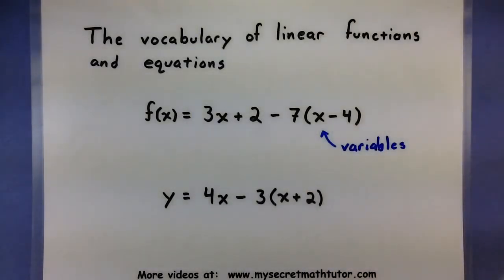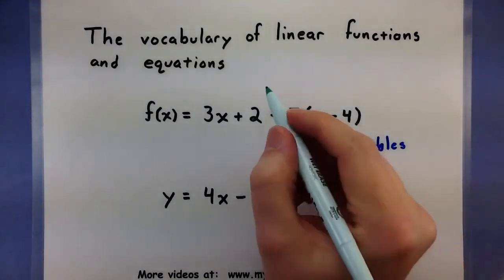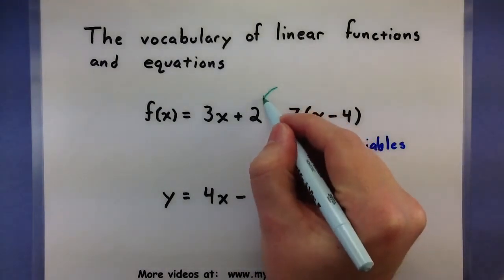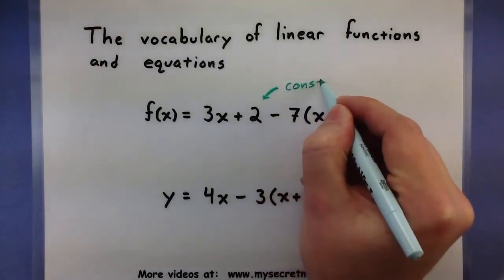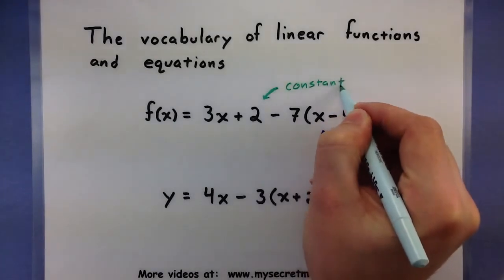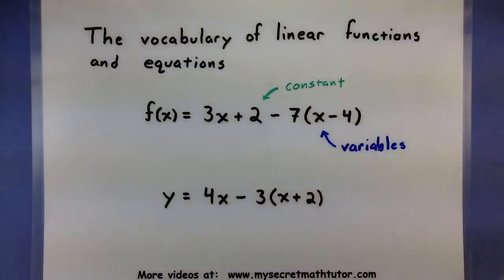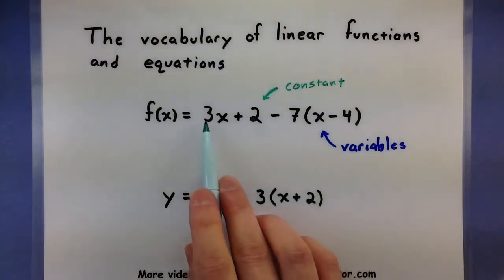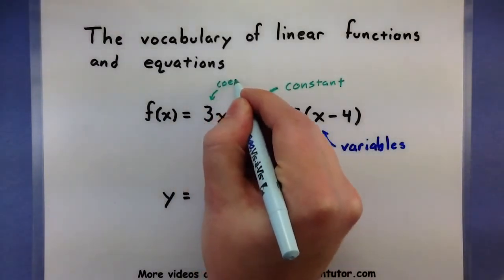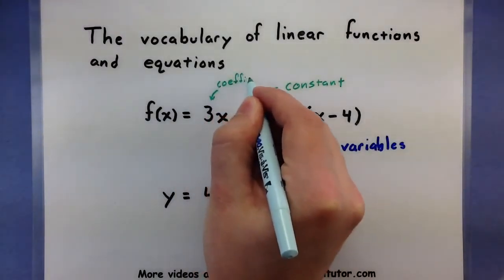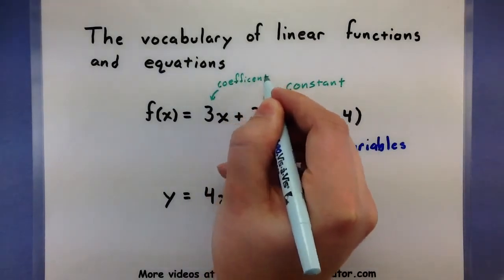There's also several numbers in each of these two, and depending on where they are or what they're associated with, we can call them a few different things. If you can see a single number all by itself, then we will call this a constant. That means it's not being multiplied by anything, but it may be added or subtracted. If you see a number that's being multiplied by a variable, then we call this a coefficient.